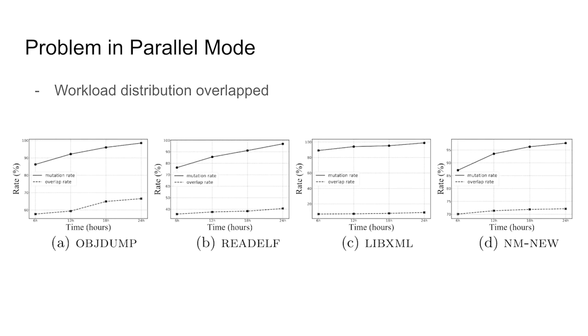In our motivation study, we run AFL on four popular benchmark programs with two parallel instances for 24 hours, tracing the mutation process to understand which seeds are mutated by which instance. As shown here, the different instances are indeed mutating overlapped seeds, while many other seeds have never been mutated. Consider the results after six hours as an example. On average, nearly 20% of the seeds are never being mutated. However, over 42% of the seeds receive multiple rounds of mutations.